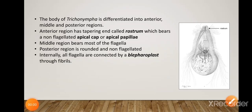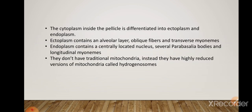Internally, all flagella are connected by a blepharoplast through fibrils. The cytoplasm inside the pellicle is differentiated into ectoplasm and endoplasm. Ectoplasm contains an afibrillar layer, oblique fibers, and transverse myonemes. Endoplasm contains a centrally located nucleus, several parabasal bodies, and longitudinal myonemes.